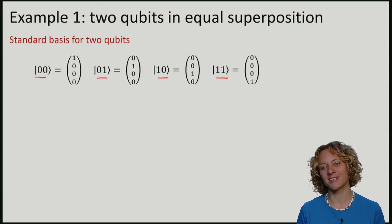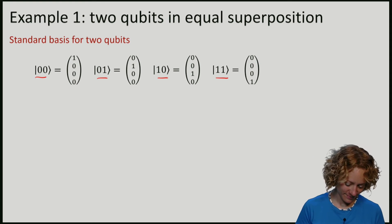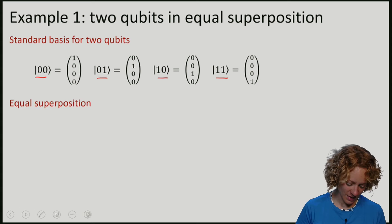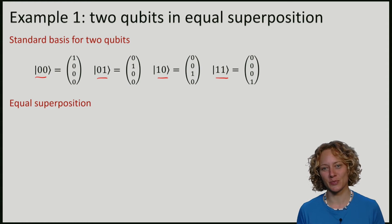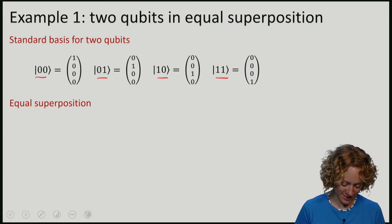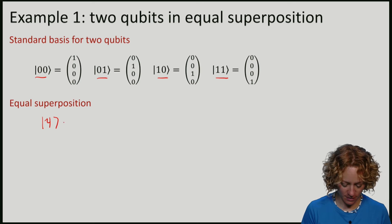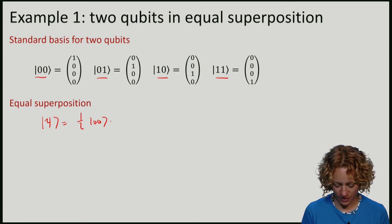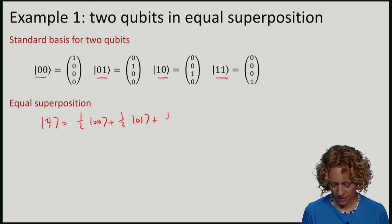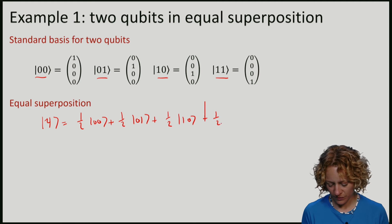Now we have the classical basis, the standard basis. And I can now take the superposition of these vectors. One example would be an equal superposition. So my state of two qubits looks like half 00 plus half 01 plus half 10 plus half 11.